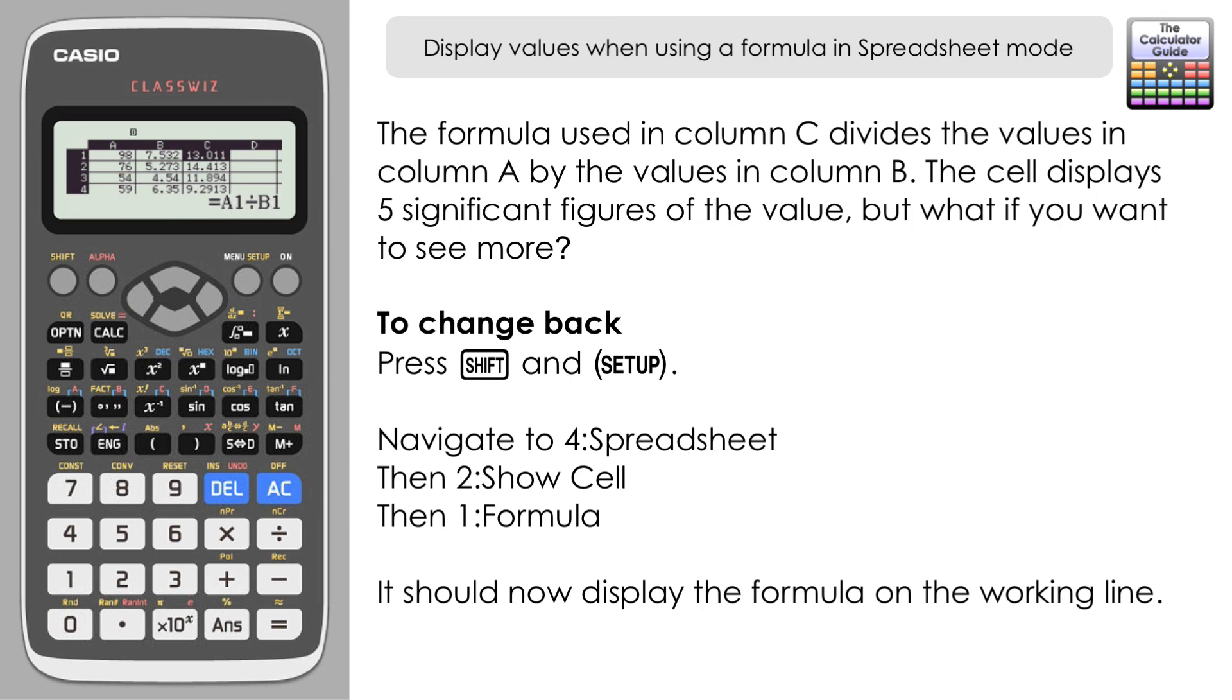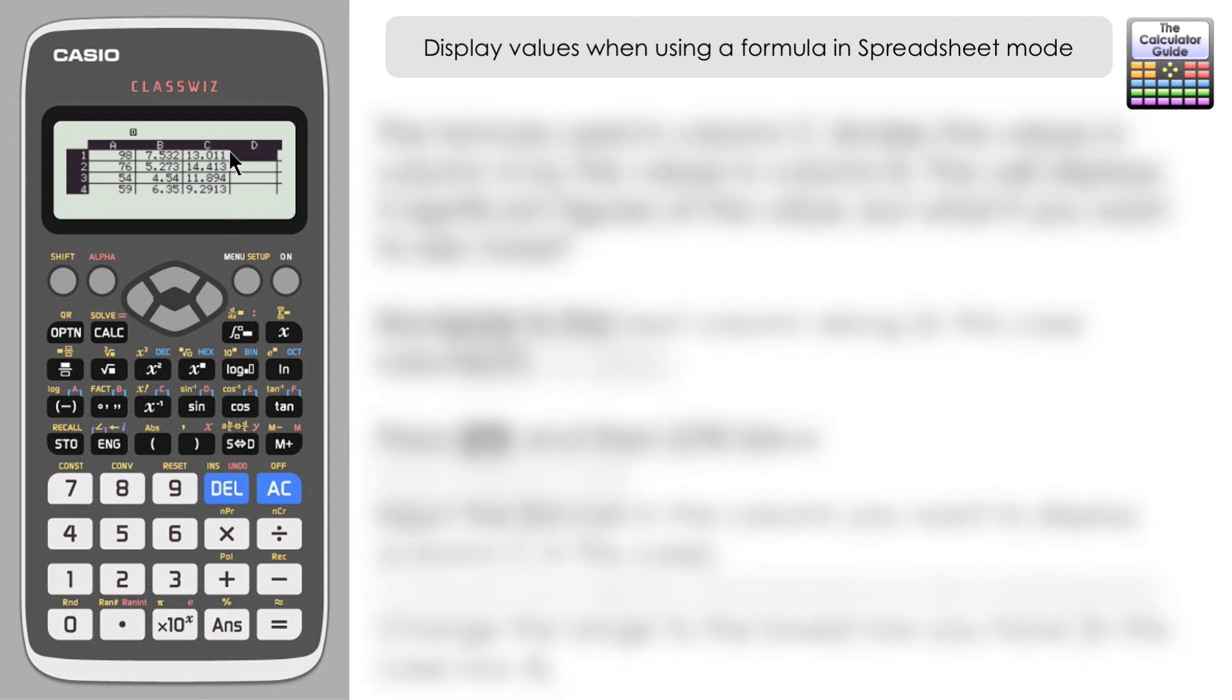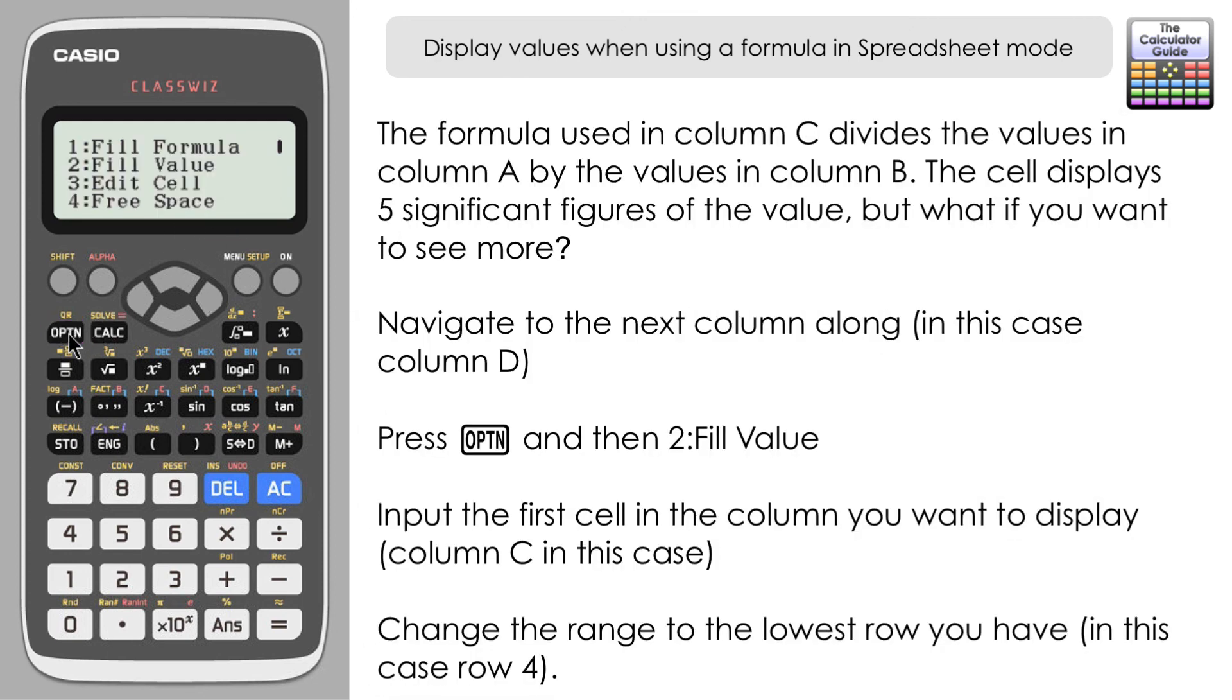There is a second way that we can display the values and that's by using the next column along. So if we use column D, I'm going to input the full values into here. If you press option and then two fill value, and then we're just going to deal with the first row here. So I want the value from C1 and the calculator will read that as in cell D1 I want to display the full value of cell C1.